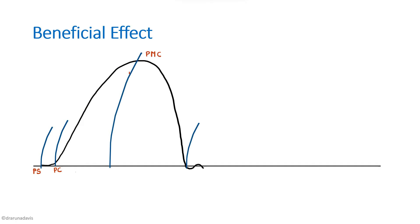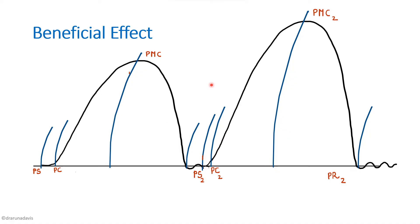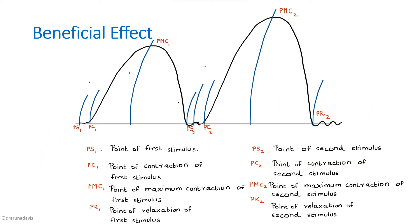The beneficial effect occurs when the second stimulus is applied after the complete relaxation of the first contraction. You get a much taller and broader curve for the second stimulus. The reasons for this beneficial effect are: increased temperature, increased elasticity, decreased viscosity, decreased pH, and accumulation of calcium — all due to the previous contraction. When drawing this graph, label the point of first stimulus, point of second stimulus, point of contraction of the first, point of maximum contraction of the first, and so on.